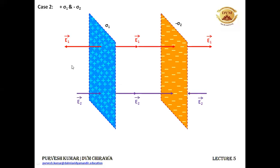We need to find the electric field because of these two sheets in three different regions. So let's find it out in region 1. In region 1, E1 due to the positively charged sheet is in this direction and E2, the electric field due to the negatively charged sheet, is in this direction.